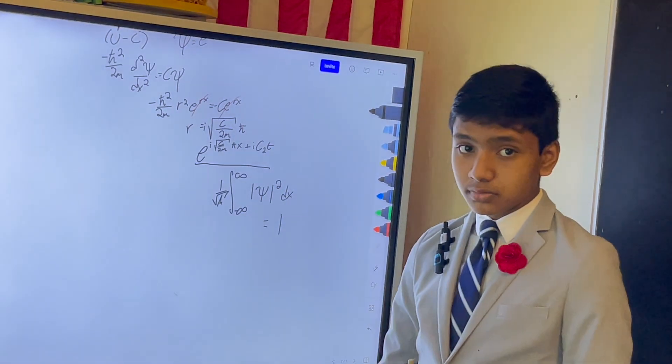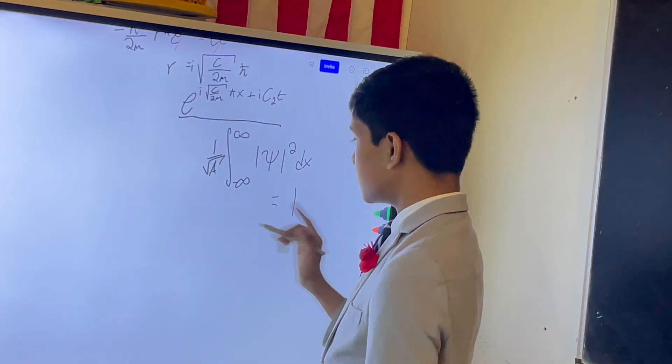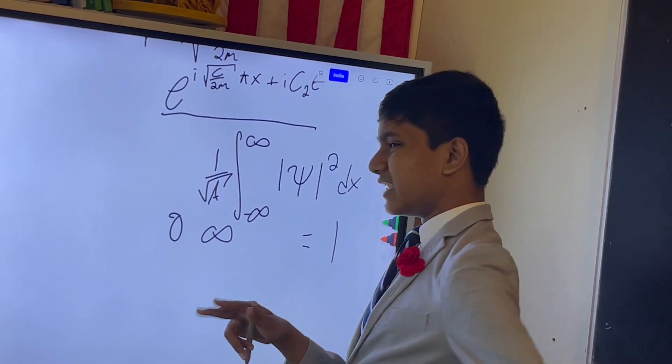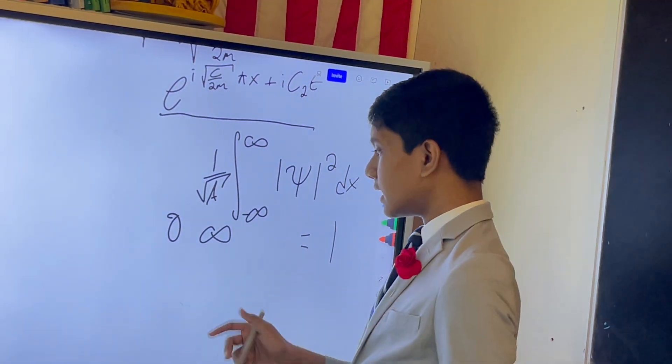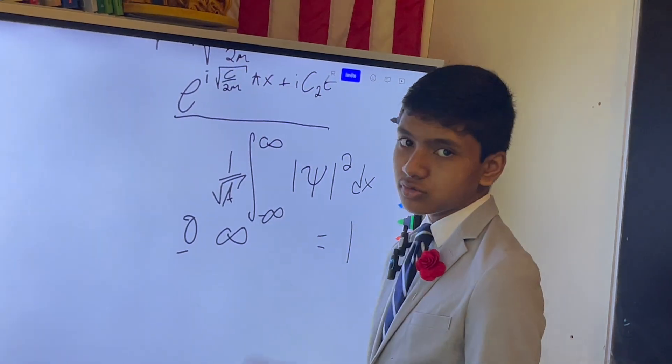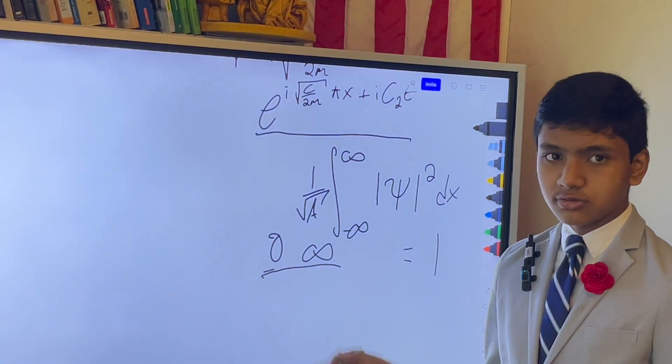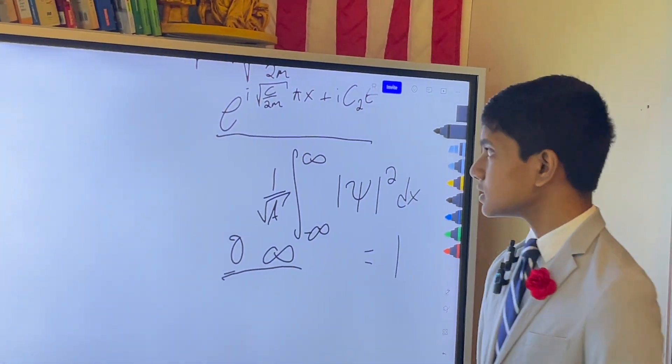But, there's a problem. What if the result is 0 or infinity? Obviously, multiplying by 1 over infinity makes no sense, and multiplying by 1 over 0 also makes no sense. So, if the integral over the entire real line is either of those two, we call it non-normalizable, just as a review.